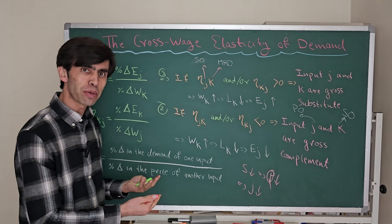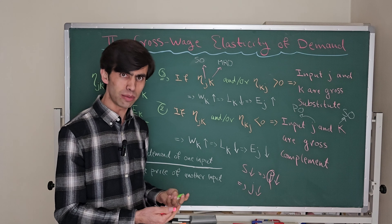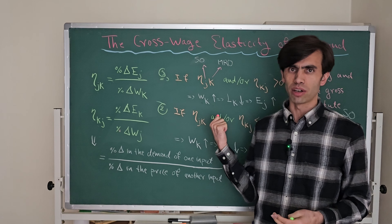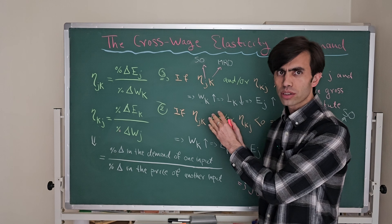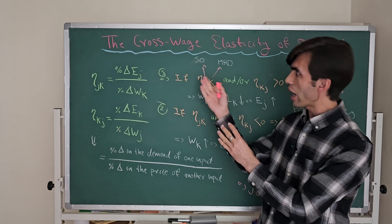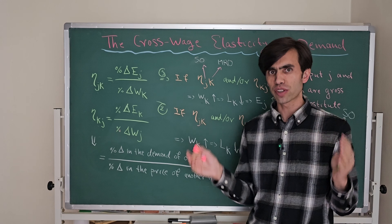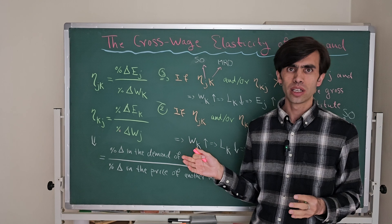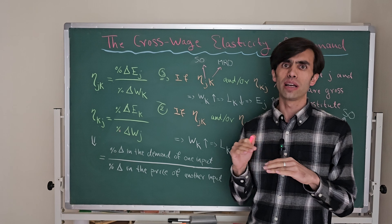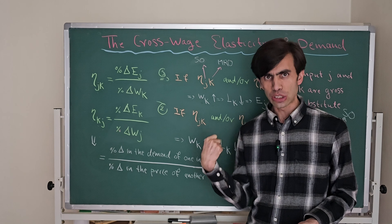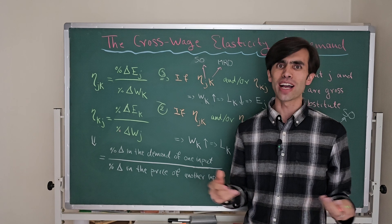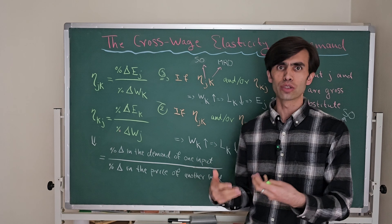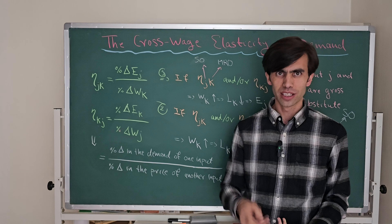This is a brief explanation about the cross-wage elasticity of demand. In the next video, we will go through a practical example using real-world data to see how the cross-wage elasticity of demand for a specific type of labor can help companies set their optimal level of labor demand. I hope you enjoyed this video — please subscribe to my YouTube channel, like the videos, and share your comments and ideas to help produce better videos in the future. See you next time.